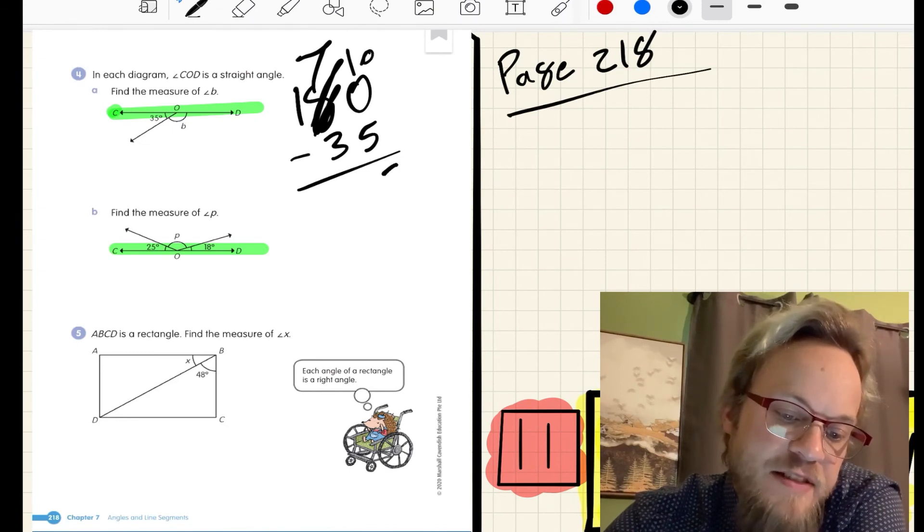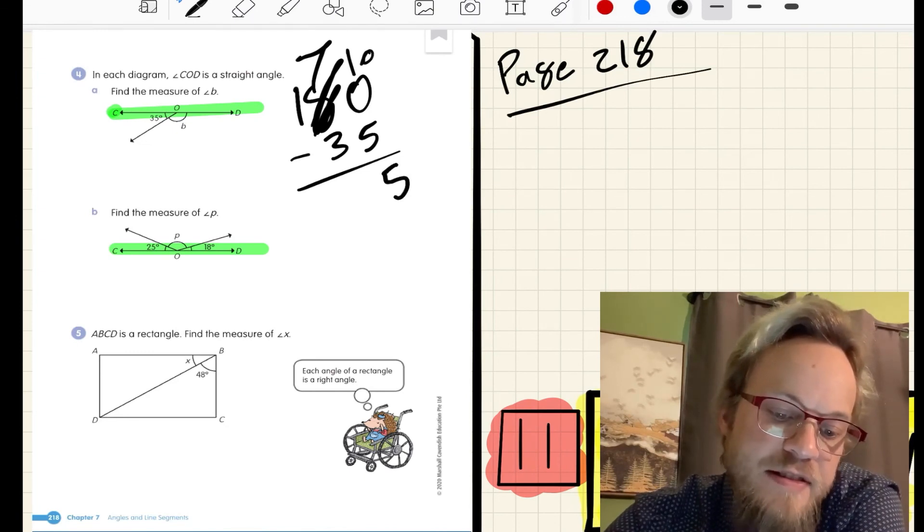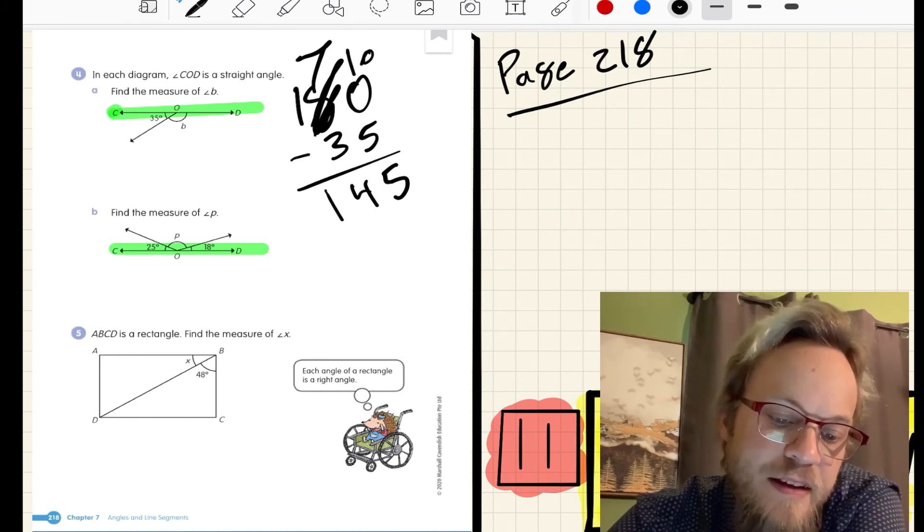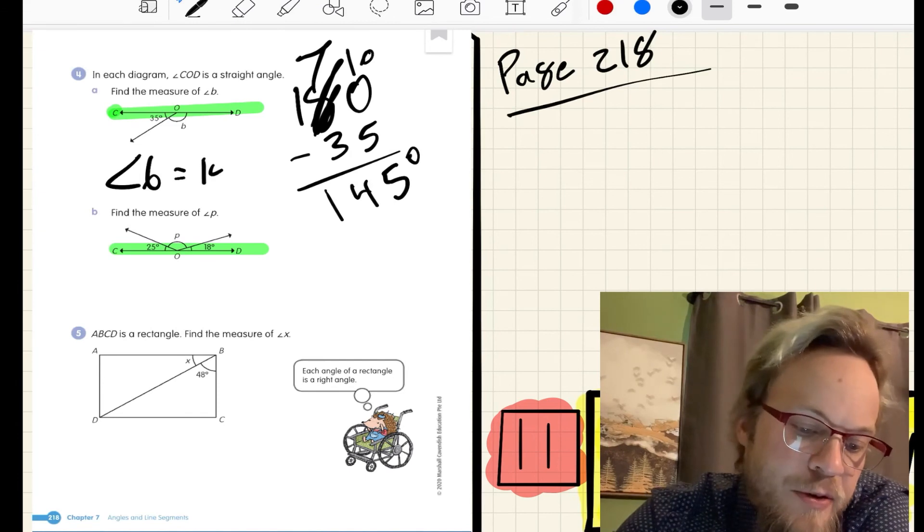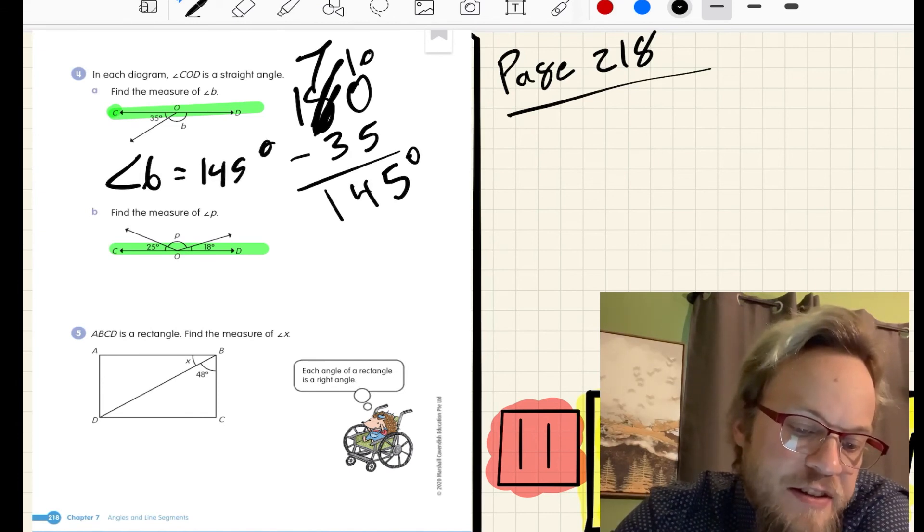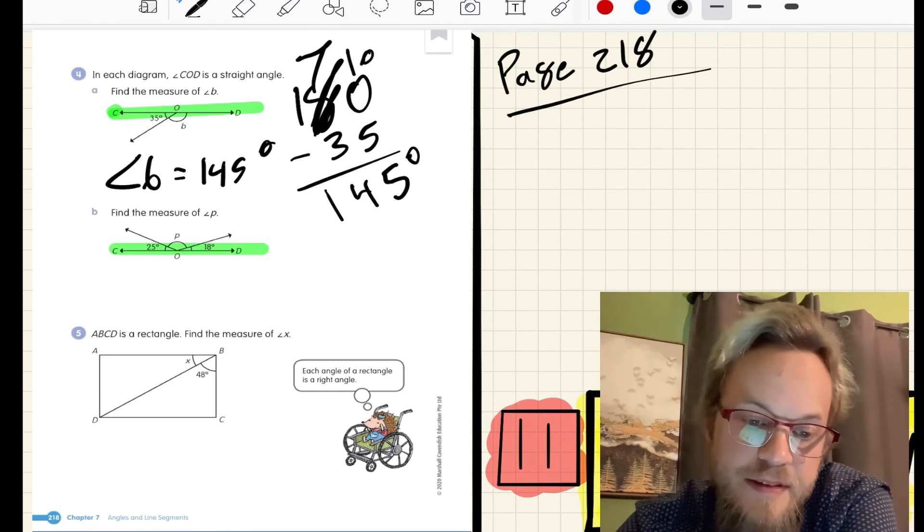That becomes 7, that becomes 10. 10 ones minus 5 ones is 5. 70 minus 30 is 40. 100 minus 0 is 100. Angle B equals 145 degrees.